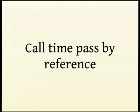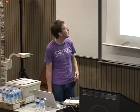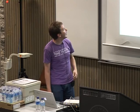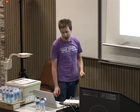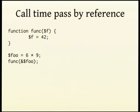Call-time pass by reference has been removed. In PHP 4 you could actually pass a reference to a variable at call time without the function necessarily expecting a reference — this was a really good way to create interesting side-effect bugs and also to segfault PHP for a long time. What we've done is you now actually have to specify in the function prototype that it accepts a reference. The ampersand has just moved from the actual call up to the declaration, and that's all there is to it.